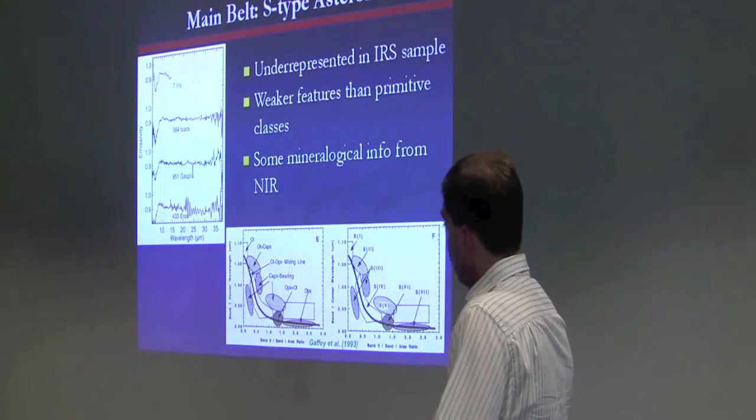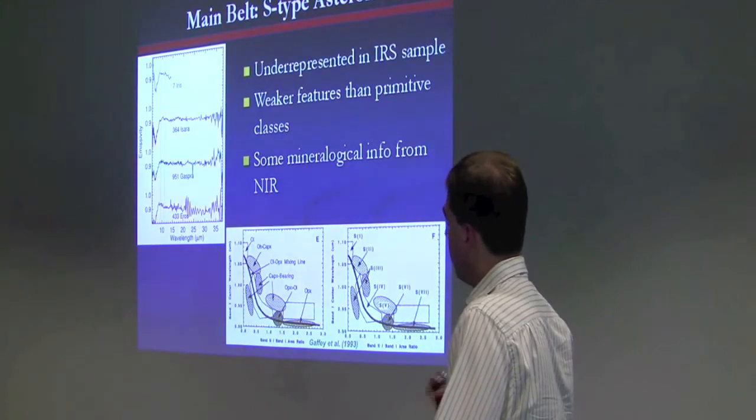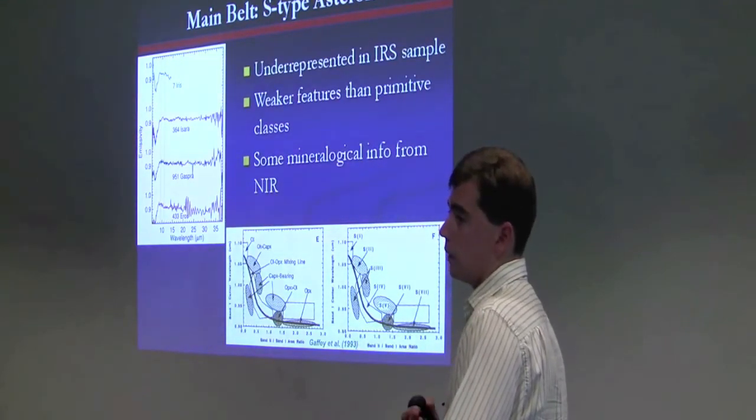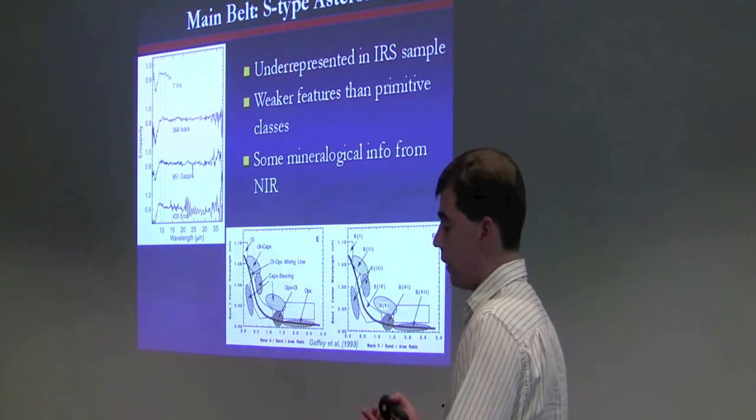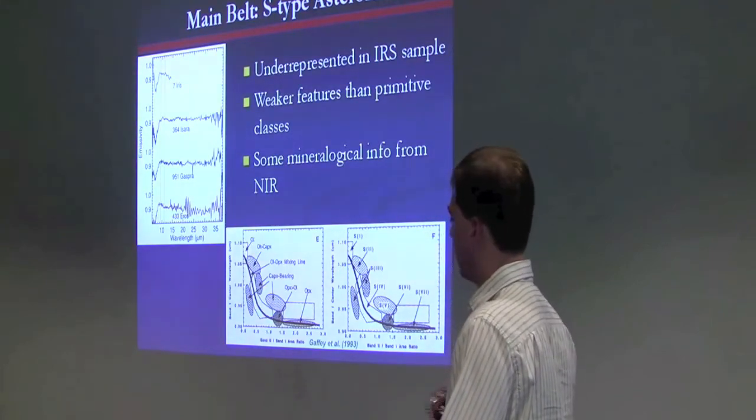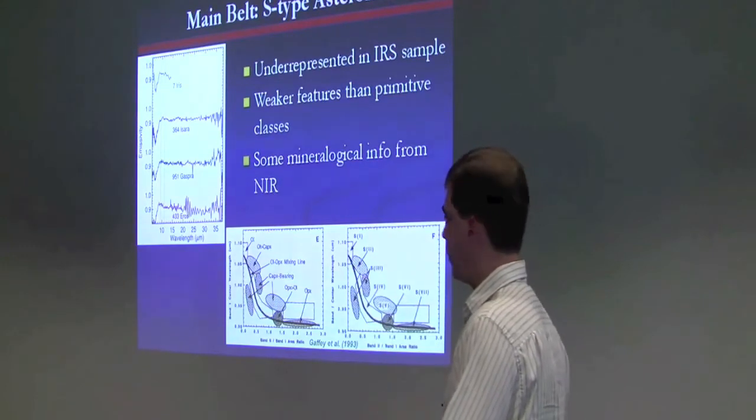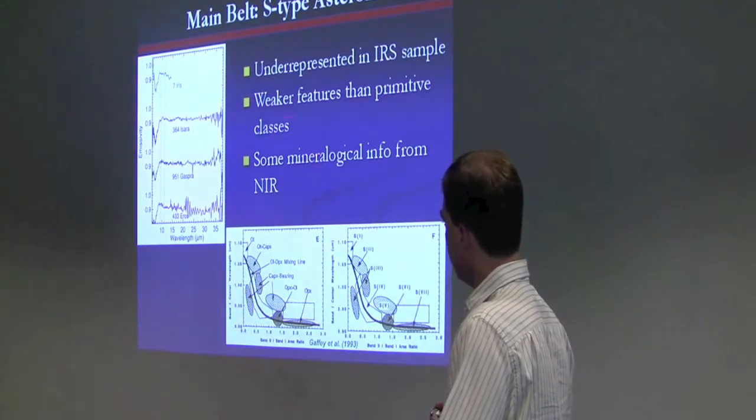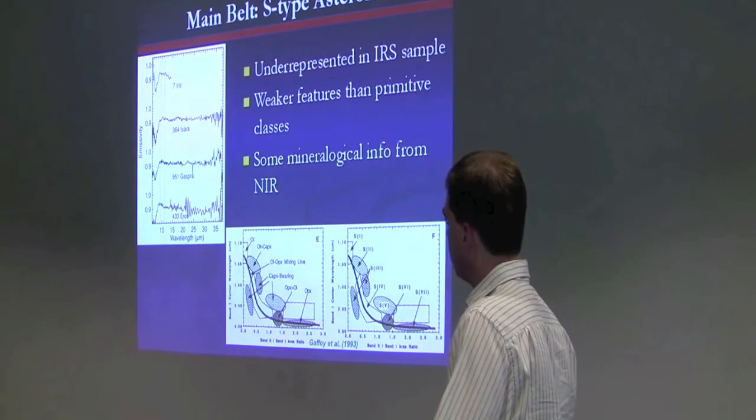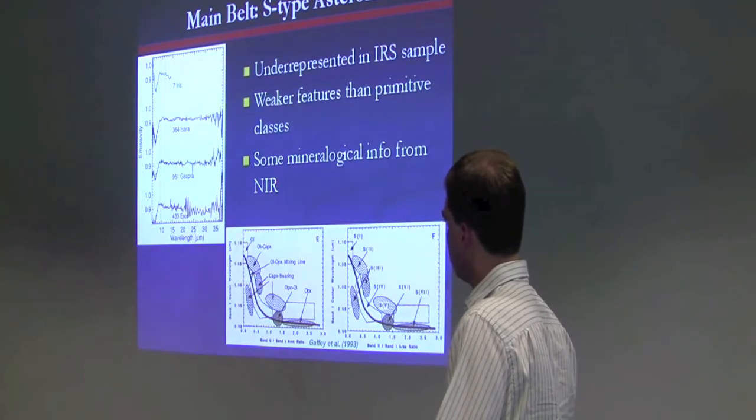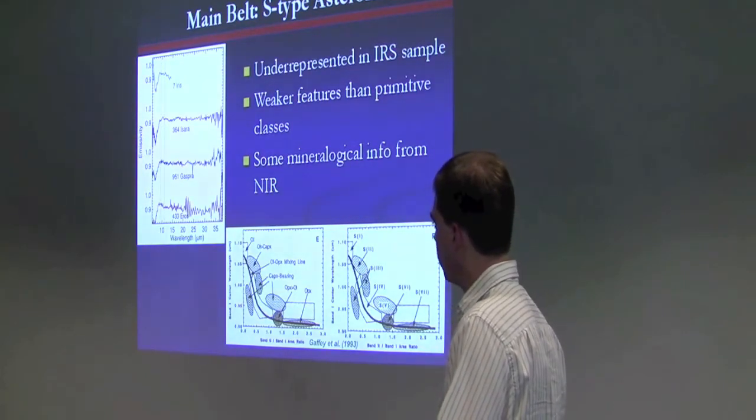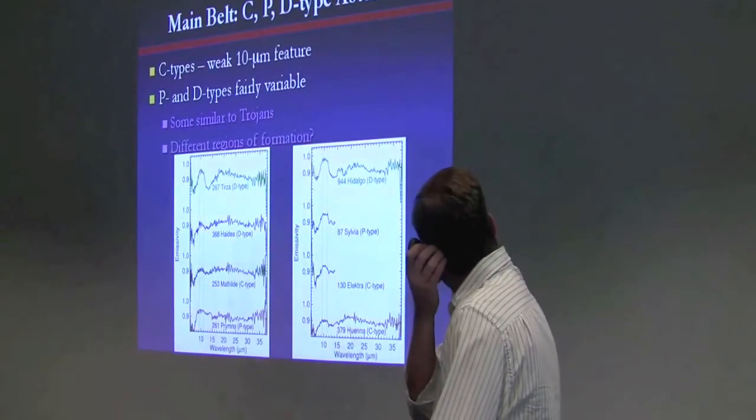Main belt S-type asteroids. There have not been very many S-types observed with Spitzer, mostly because people were going after objects whose interpretation of their surface was unclear from the shorter wavelength data. And S-type asteroids, remember, had the one and two micron bands that can be used to interpret mineralogy. They tend to show weaker features, actually, than primitive classes. And I'm still not sure why that is, but it's perhaps not so critical because we do have mineralogical information from the near-infrared for these.